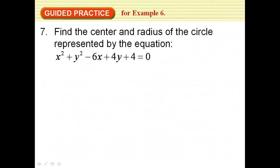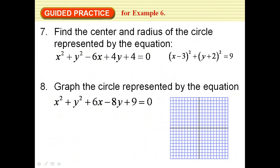Find the center and radius of a circle represented by the given equation — go through the completing-the-square procedure to get the answer. Then graph the circle: completing the square gives x plus 3, quantity squared, so the center x-coordinate is −3. The center is at (−3, something) and the radius is 4, so count up 4 units from the center and draw the circle.